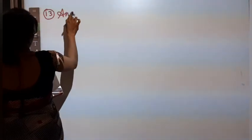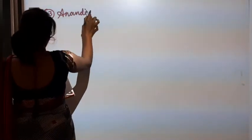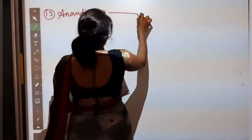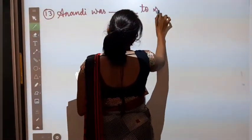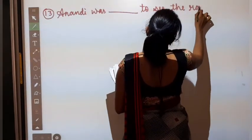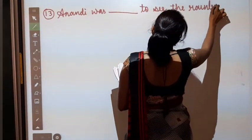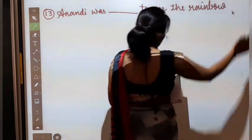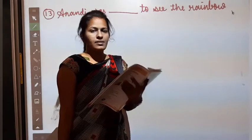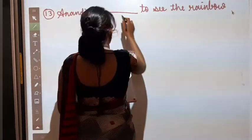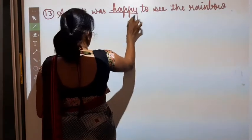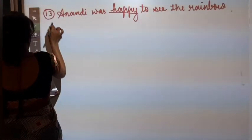Number thirteen. Anandi was dash to see the rainbow. She was surprised, angry, sad or happy. So she was happy to see the rainbow. Who khush thi. Number fourteen.